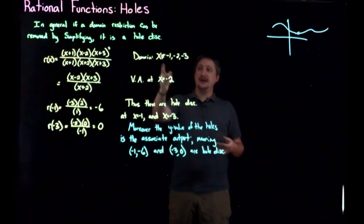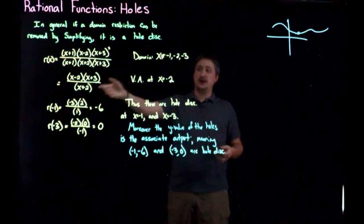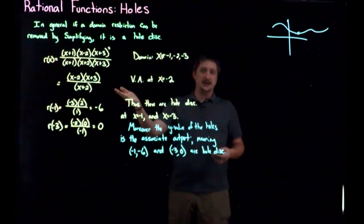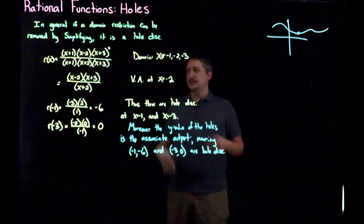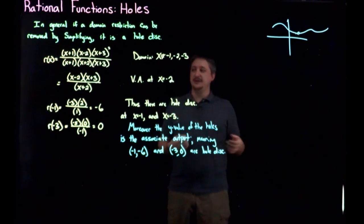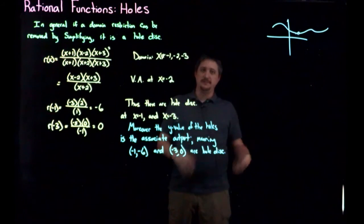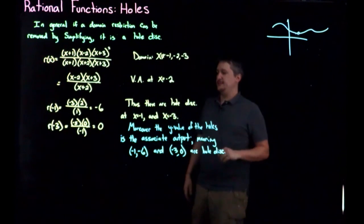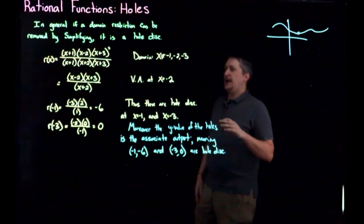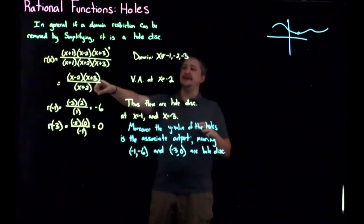so you write down all the domain restrictions before you do any other simplifying, then you actually simplify it. And generally speaking, if the bottom is still zero at your domain restriction, it's probably going to be a vertical asymptote. And if the bottom is not zero, then it is probably going to be a hole.